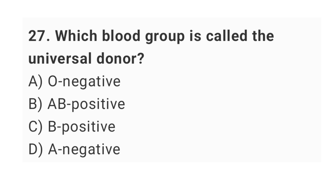Question number twenty-seven: which blood group is called the universal donor? The right answer is option A: O negative.